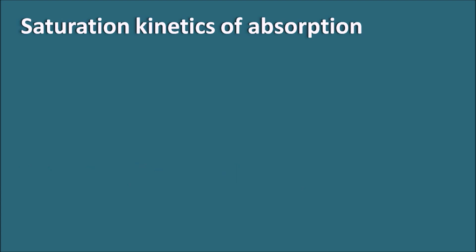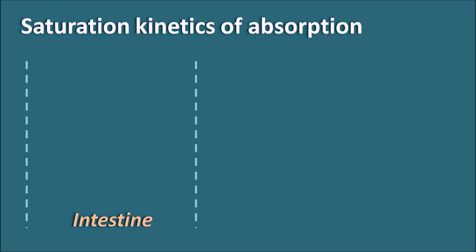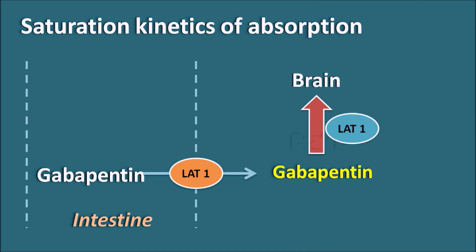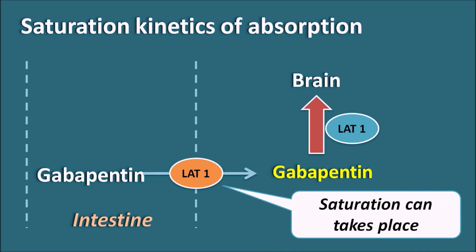Regarding saturation kinetics of absorption: Gabapentin is absorbed through the intestine but shows saturation kinetics. It is transported across the small intestine by a specialized transporter, LAT1 — L-amino acid transporter 1 — and enters systemic circulation, then enters the brain also via LAT1. The number of LAT1 transporters in the intestine is limited, so when the Gabapentin dose is increased, LAT1 transporters become saturated and further absorption is restricted. Since LAT1 is a capacity-limited transport system, as the dose increases, absorption does not increase proportionally — there is an inverse relation between Gabapentin dose and its absorption.